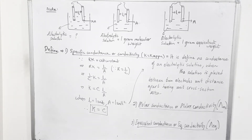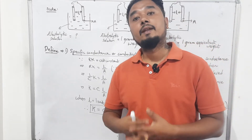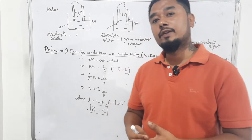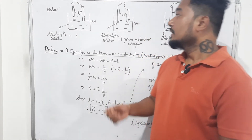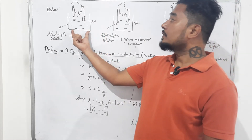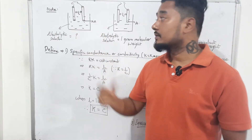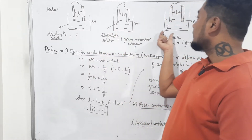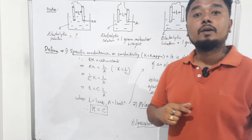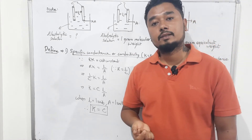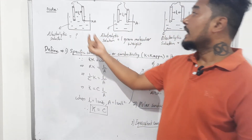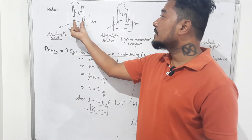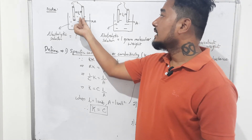Hello students, we are going to continue from the part I left in my first video about electrochemistry. I have already explained the meaning of this — it is called the conductivity cell. We observe conductance in it, and the distance between the two electrodes is called L.